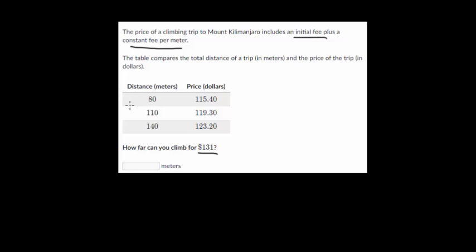So let's first look at our distance. It looks like we are jumping by 30 meters every time. And then let's figure out our price. It looks like it's almost $4. $4 more would take us to $119.40, so it's $0.10 less than that. So it looks like we're going up by $3.90.